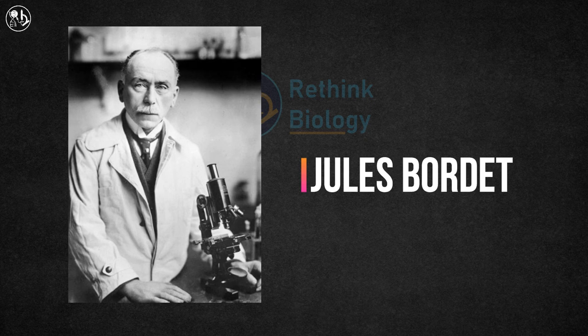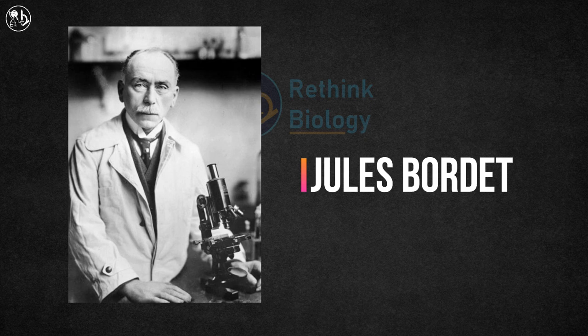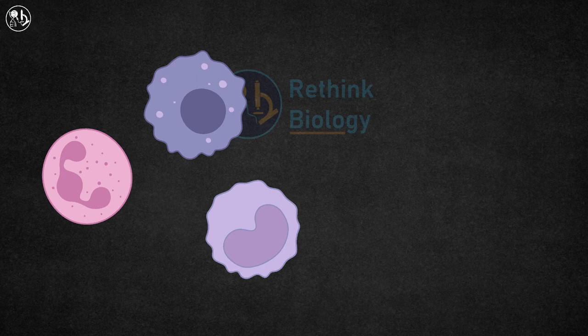Jules Baudet discovered it in the 1890s. The complement system is made up of almost 30 different plasma proteins, the majority of which are produced by the liver.